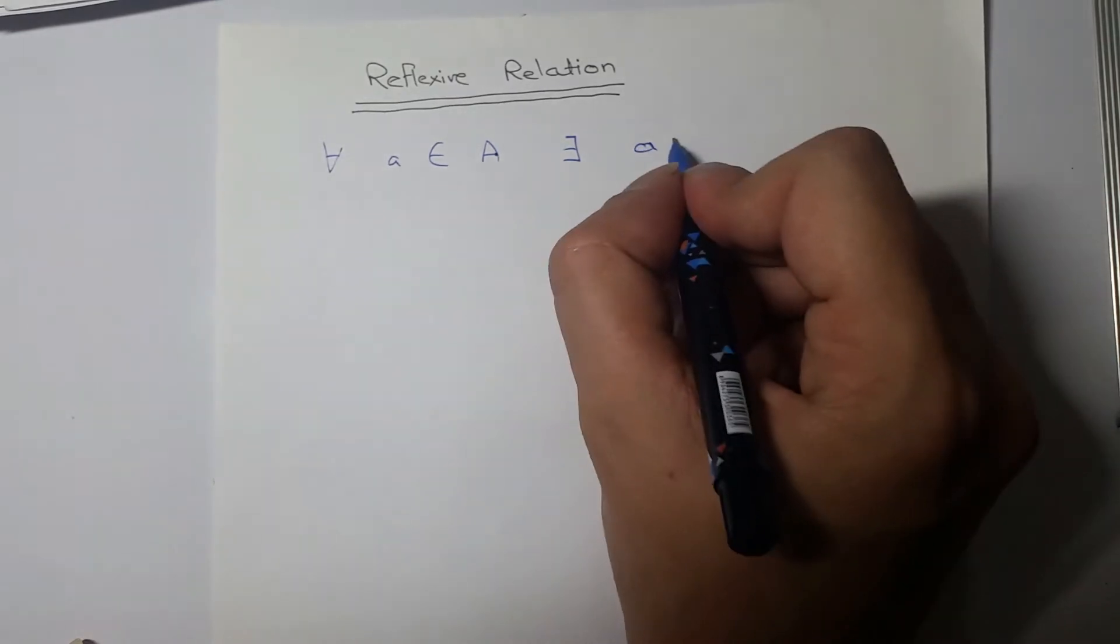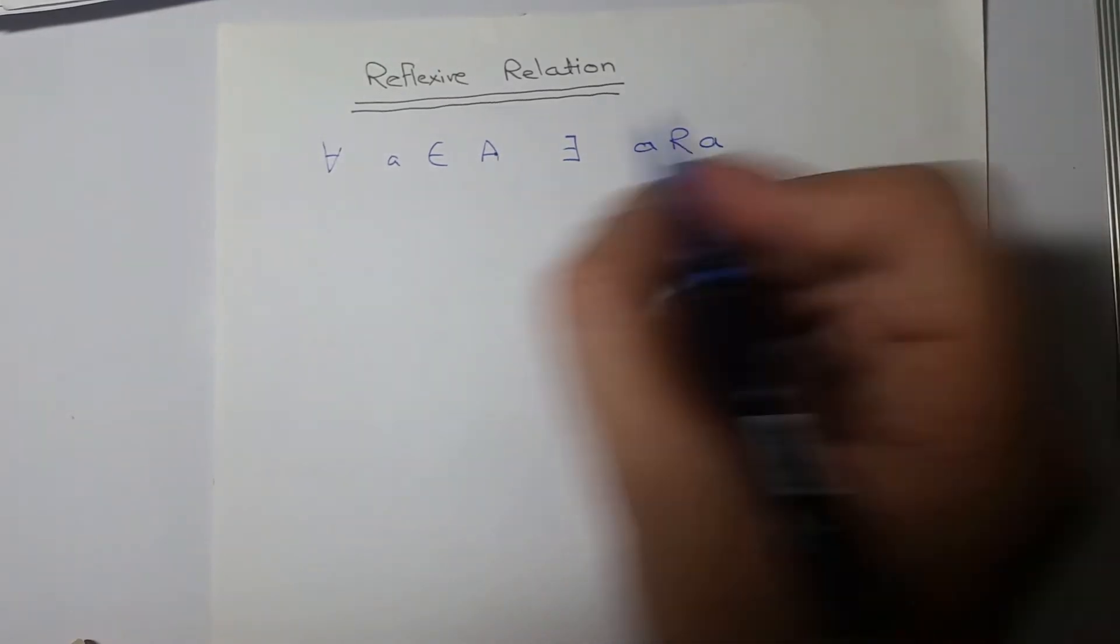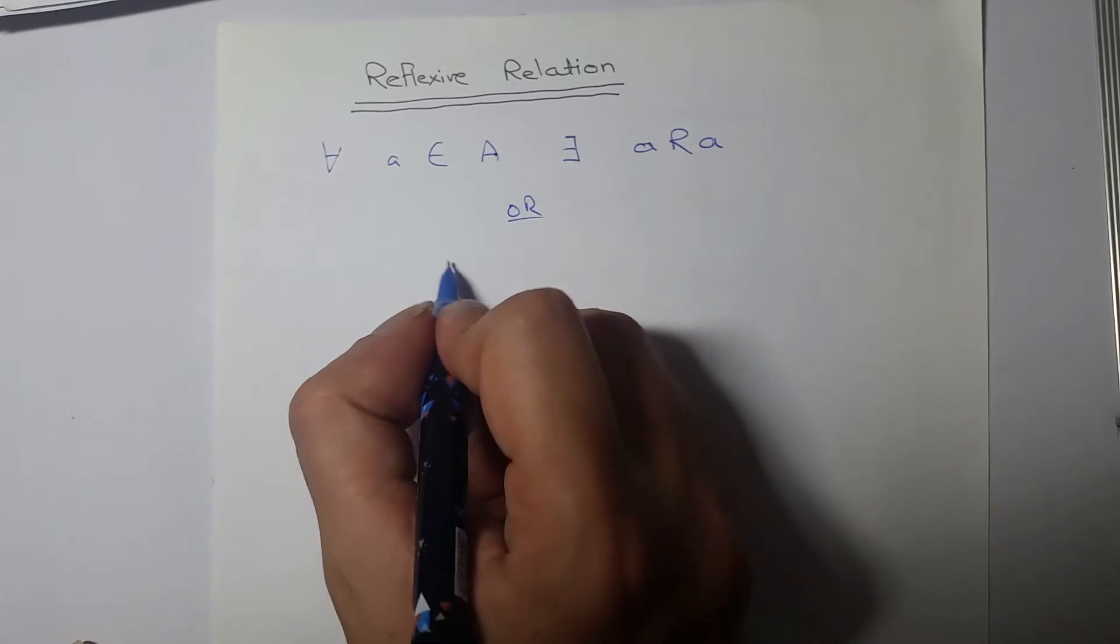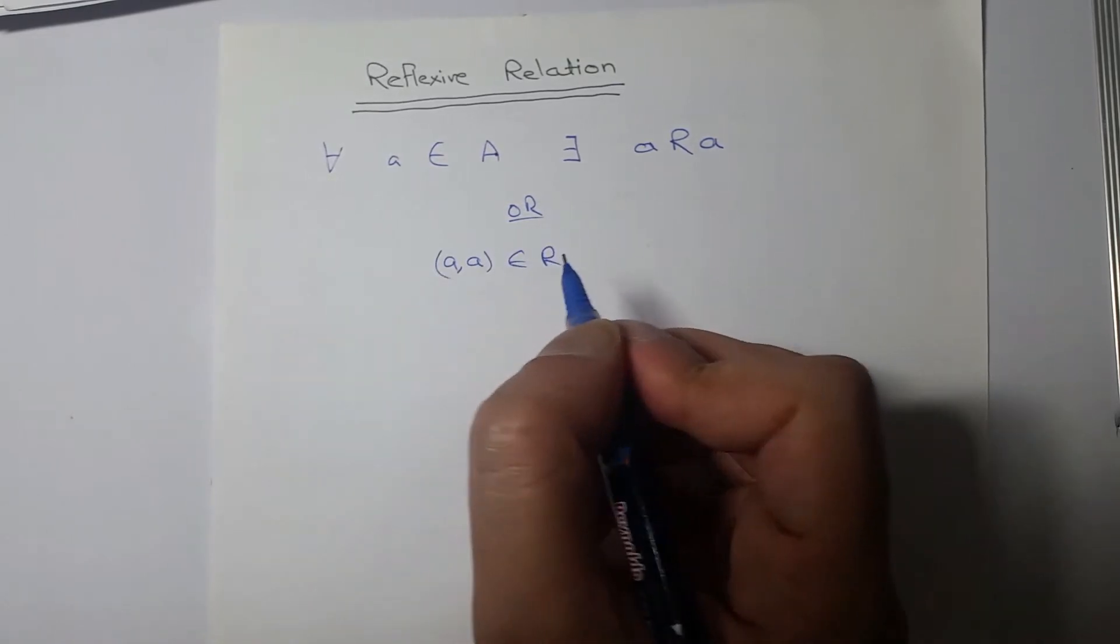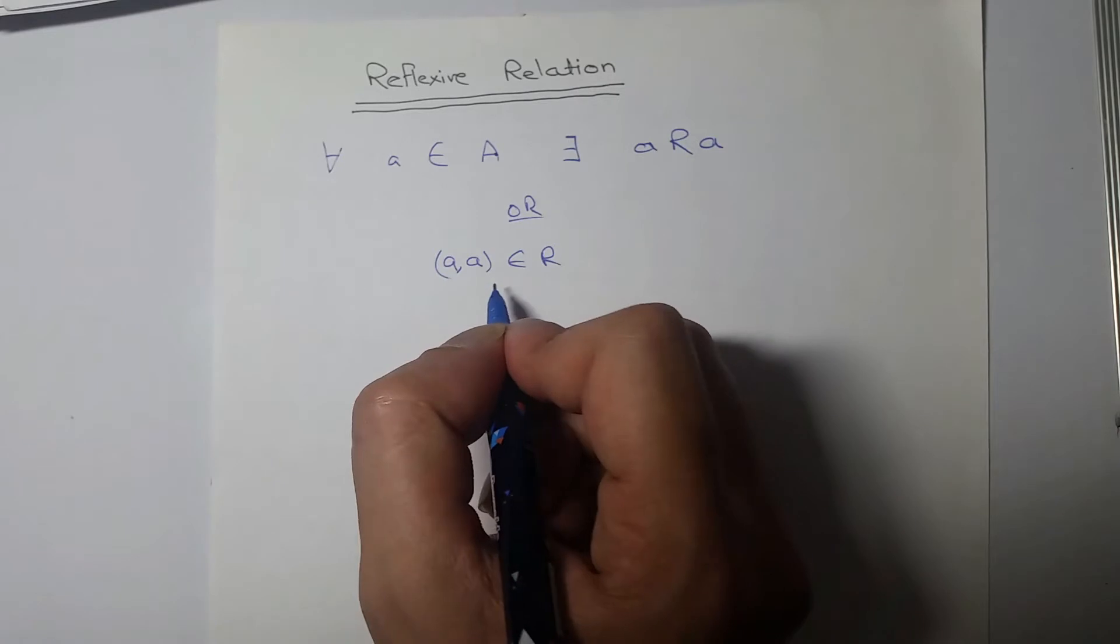In simpler terms, (a,a) belongs to R. Every element must be paired with itself, then it is called a reflexive relation.